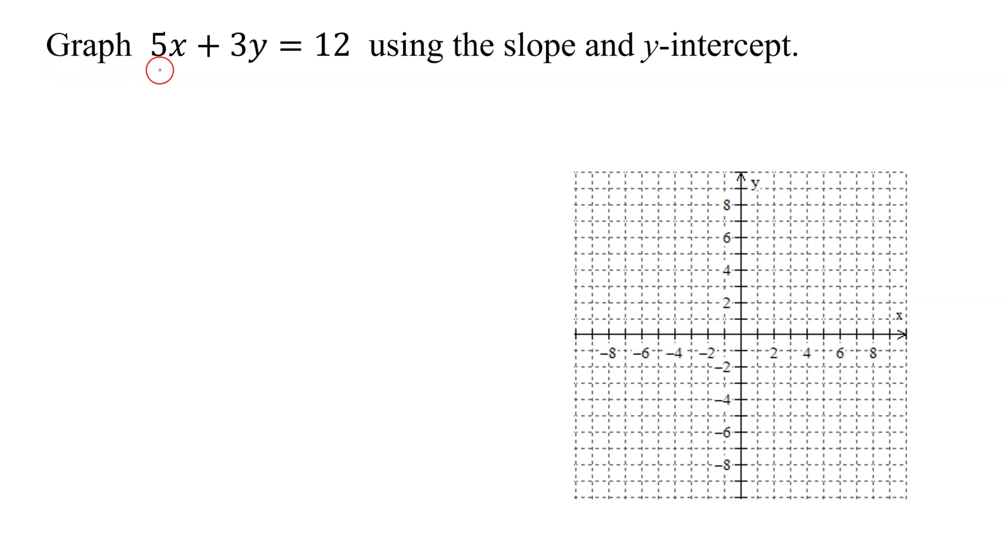In this example, we need to graph 5x plus 3y equals 12 using the slope and the y-intercept. Remember the slope-intercept form of a line is y equals mx plus b.